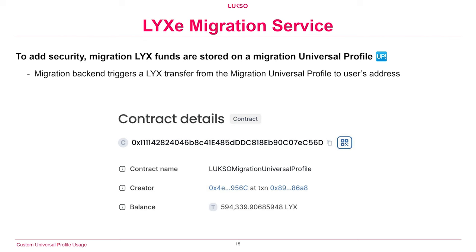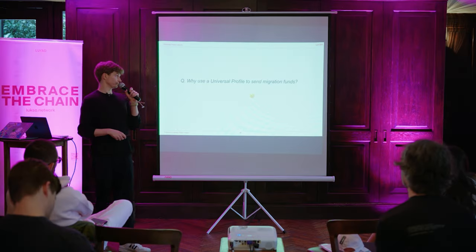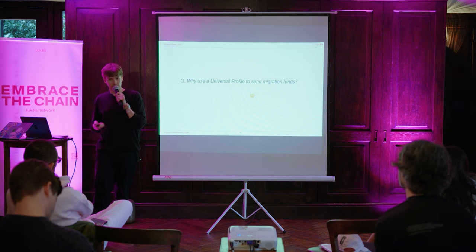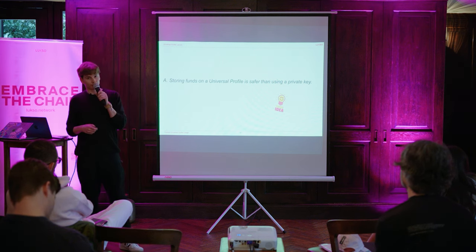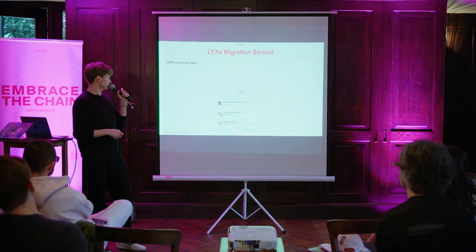The way Universal Profiles fit into this is we had a Universal Profile — called the Luxo Migration Universal Profile — which was sending all of the LUX on the Luxo mainnet to the users. You can see the address is 0x1111 and the balance here is 600,000 LUX. This was the contract sending LUX to users as they migrated from the Ethereum mainnet, with the migration backend triggering these token transfers.